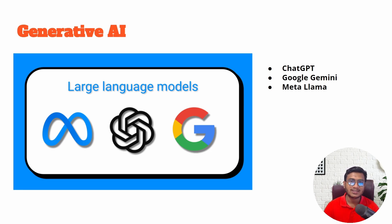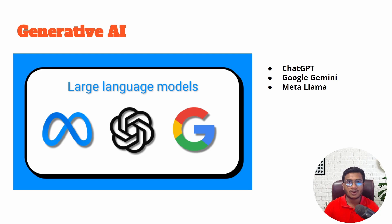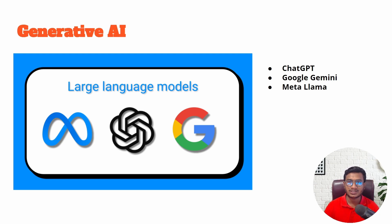The same things we can perform with the help of Meta LLaMA as well. ChatGPT is developed by OpenAI, Google Gemini is developed by Google, and LLaMA is developed by Meta — that means Facebook. So all the tech giant companies are working on Generative AI, and day by day they are improving it, bringing different large language models and launching different applications for users.